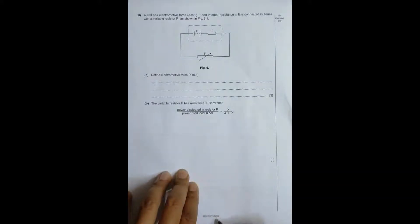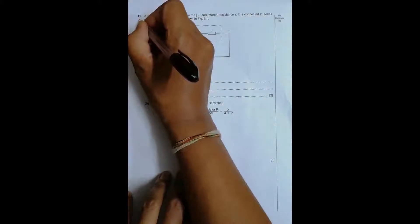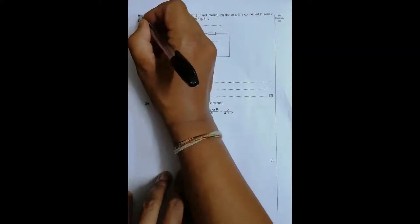Hello folks, this is 2009 October November paper 2-1 and the question number is 6. So in my compilation it has become 16 but actually it is number 6.